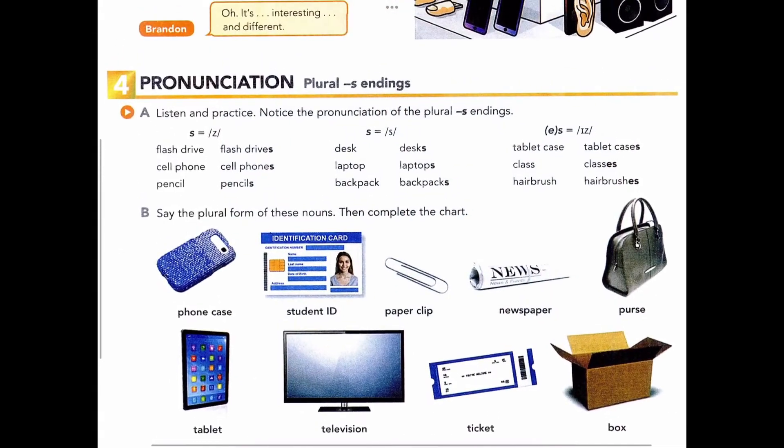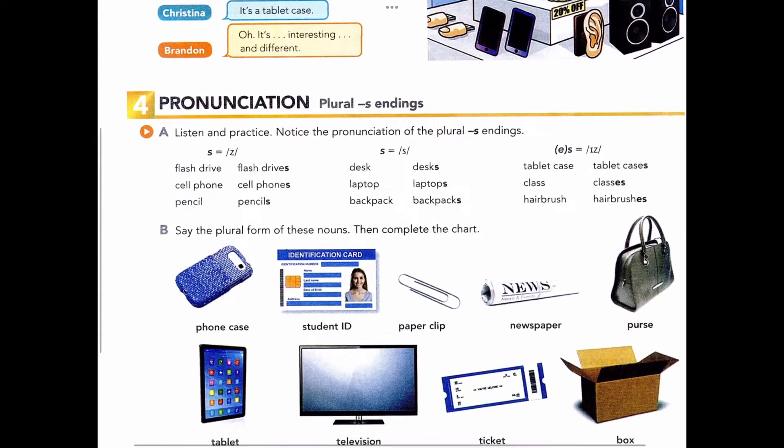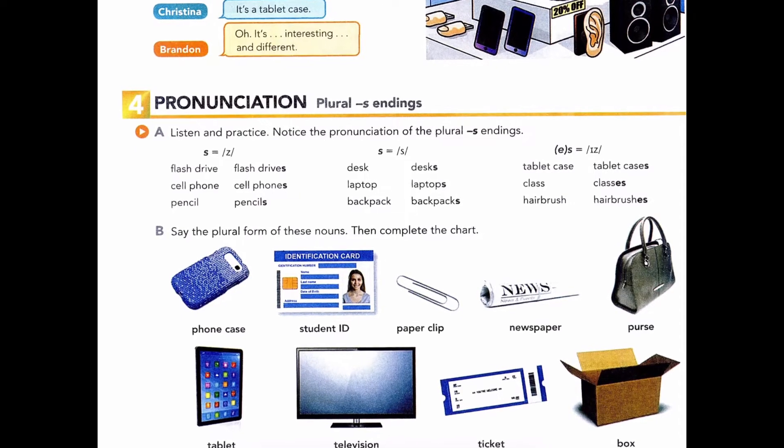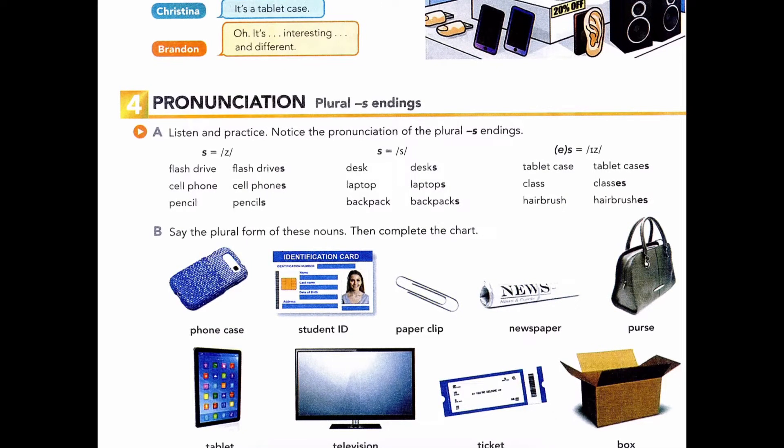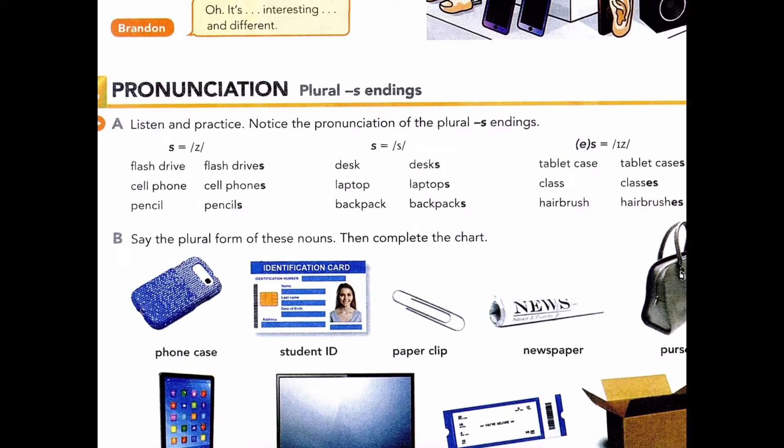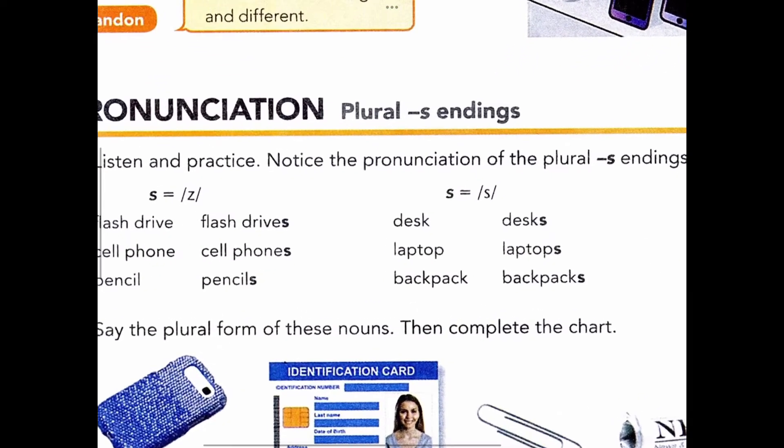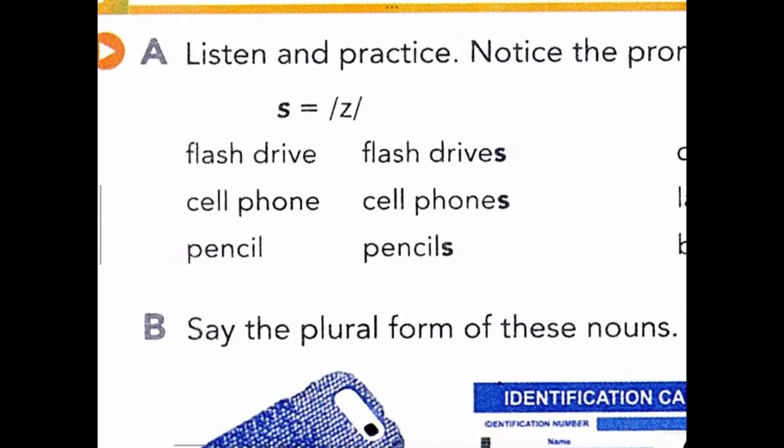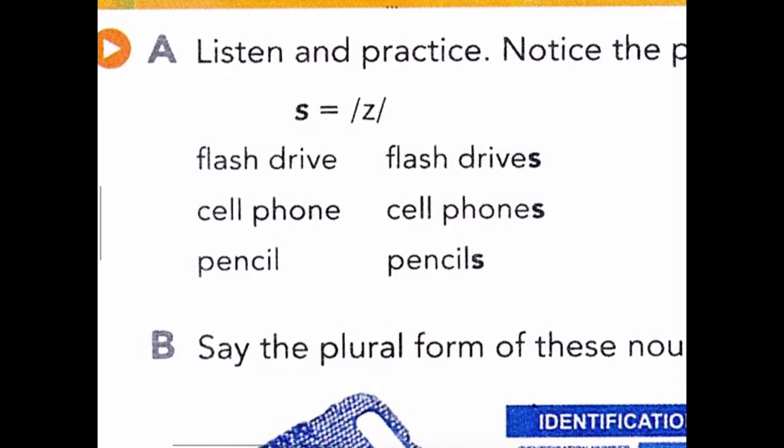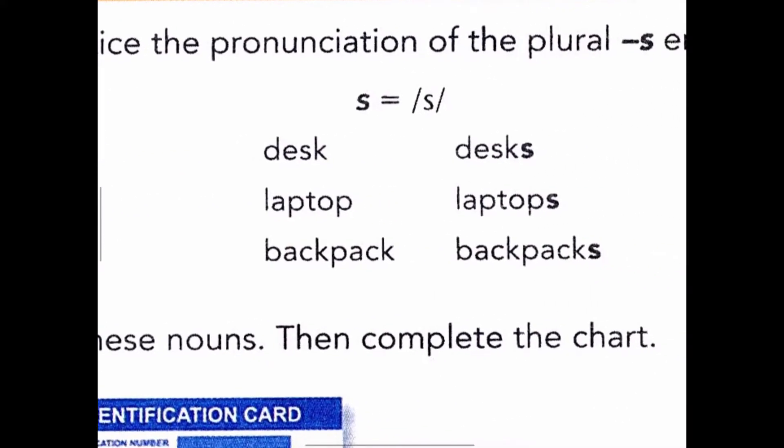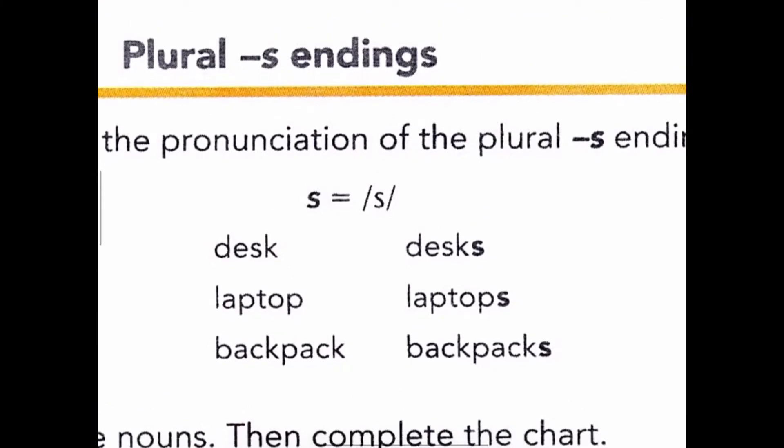Page 9, Exercise 4, Pronunciation: Plural -s endings. Part A: Listen and practice. Notice the pronunciation of the plural -s endings. S equals Z: flash drive, flash drives; cell phone, cell phones; pencil, pencils. S equals S: desk, desks.